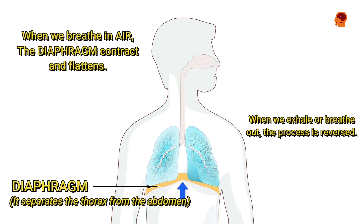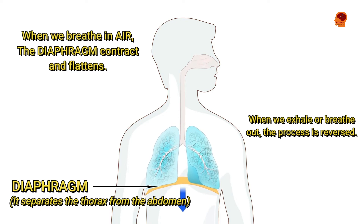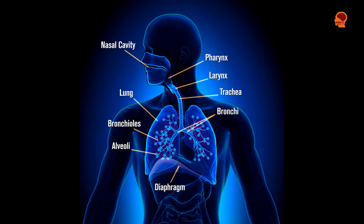The diaphragm is a muscular sheet below the lungs that separates the thoracic cavity from the abdomen. The respiratory system consists of the nose, the pharynx (the throat), the larynx (the voice box), the trachea (the windpipe), the bronchi, and the lungs.